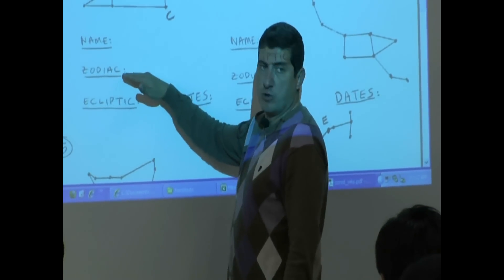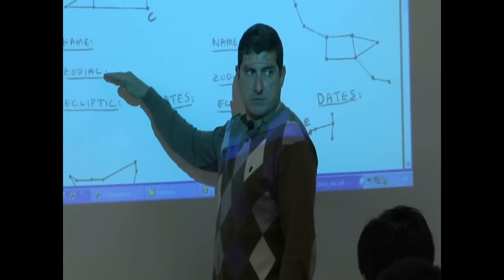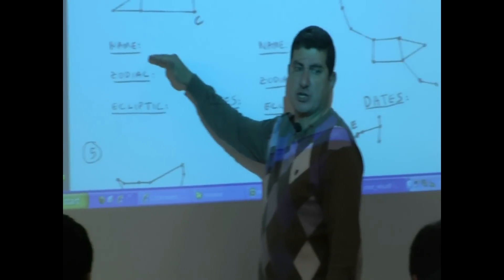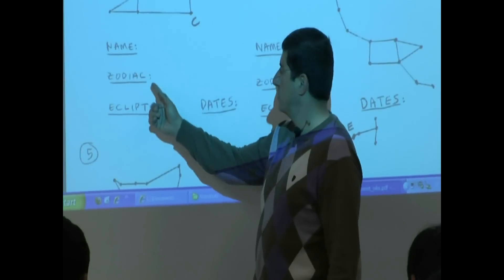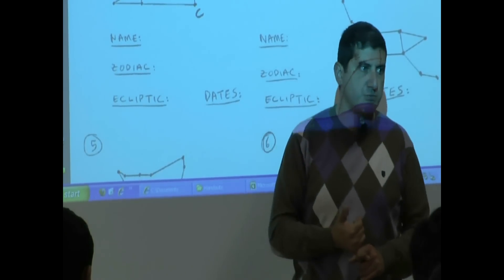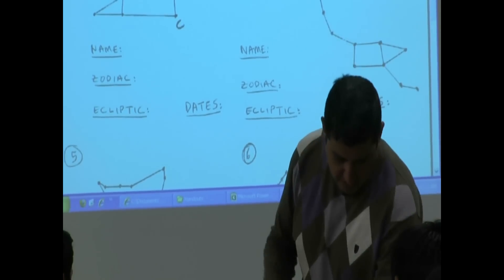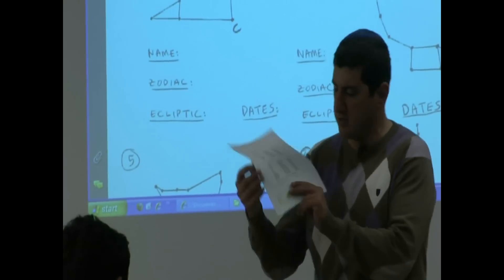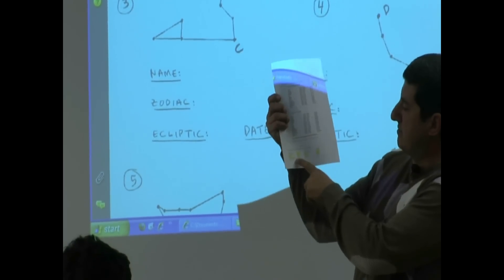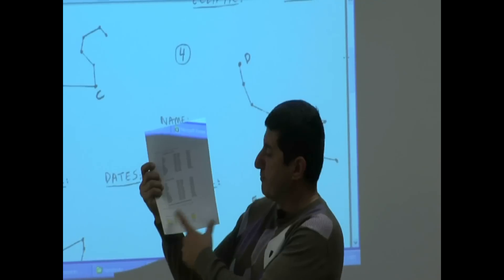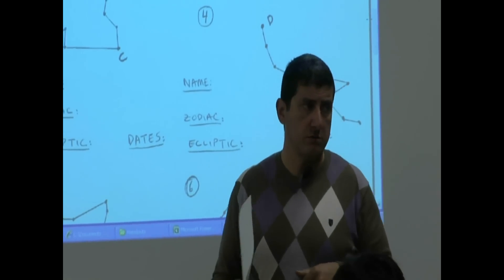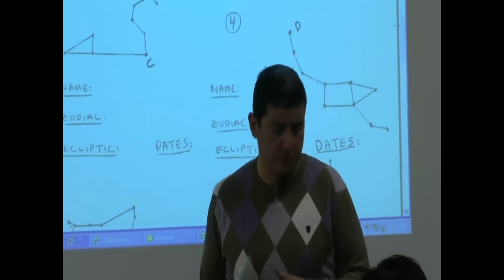Then next to zodiac I want you to put yes or no. Is that constellation part of the constellations of the zodiac? All I'm having you do is put a yes or a no. Which list are you looking at? You're looking at the list here, right down here on the bottom, the sheet that we just saw. If it's part of that 24 you put a yes, if it's not you put a no.